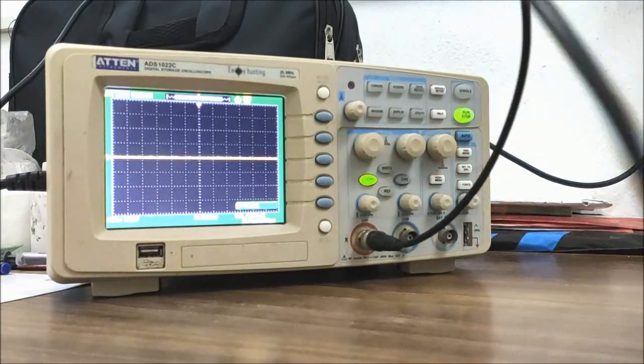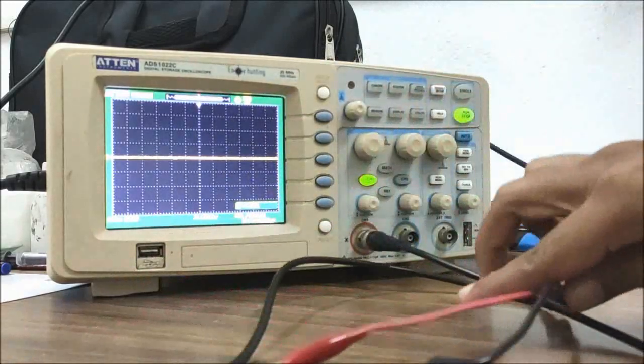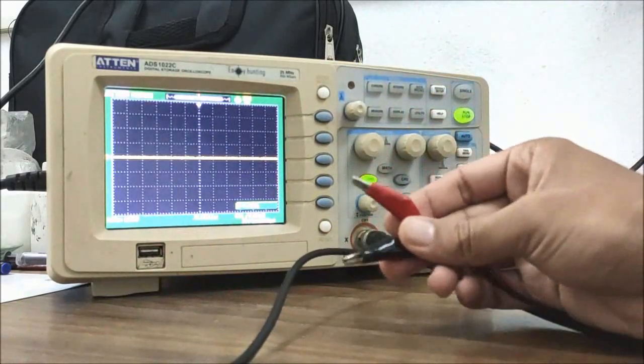This is a digital storage oscilloscope. Channel 1 is connected with a measuring cord having a crocodile clip.